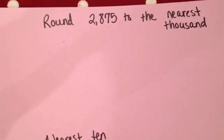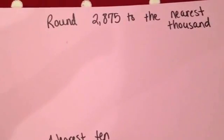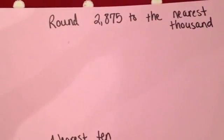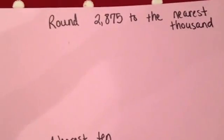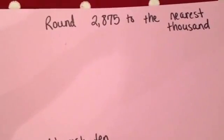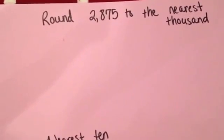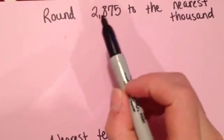A lot of times teachers just tell you, well look at the number to the right of it and if it's 5 or higher you round up and if it's 4 or lower it stays the same. But I'd like to show you what's really happening behind the scenes of rounding. So let's take this example problem.